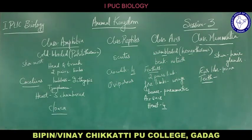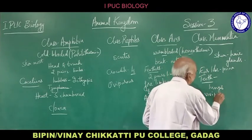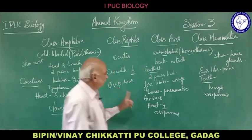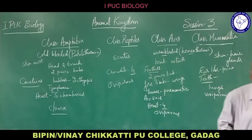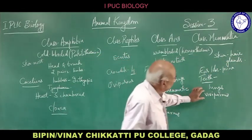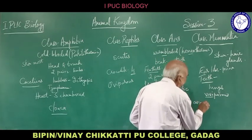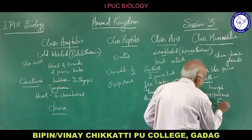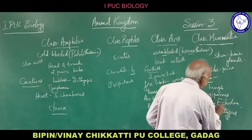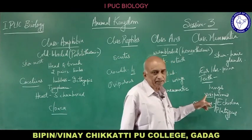Respiration is only by lungs. Mammals are viviparous — they give birth to young ones — whereas birds and reptiles are oviparous, laying eggs. However, there are exceptional mammals that are oviparous: Echidna and Platypus. With these two exceptions, all mammals are viviparous.